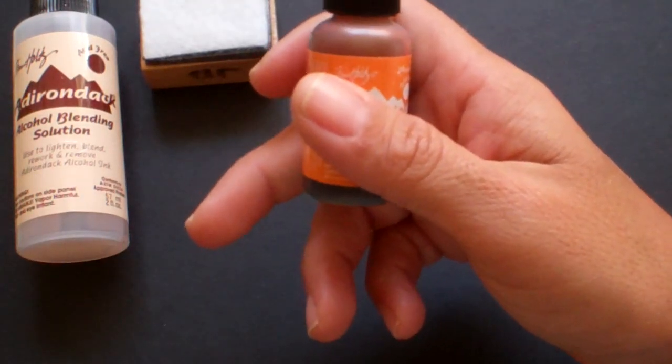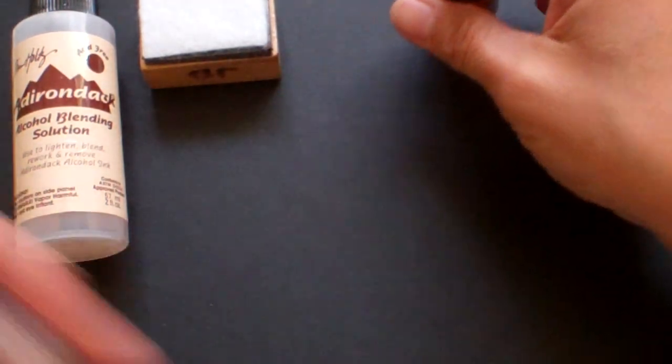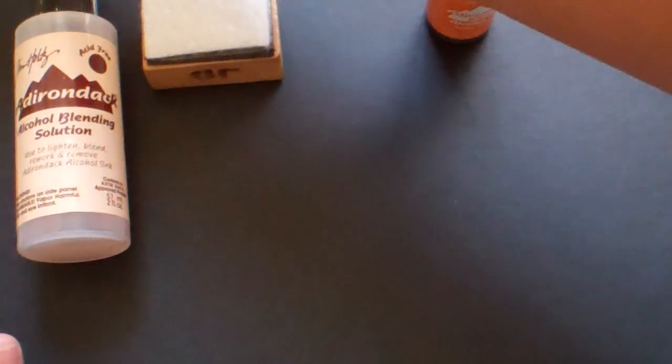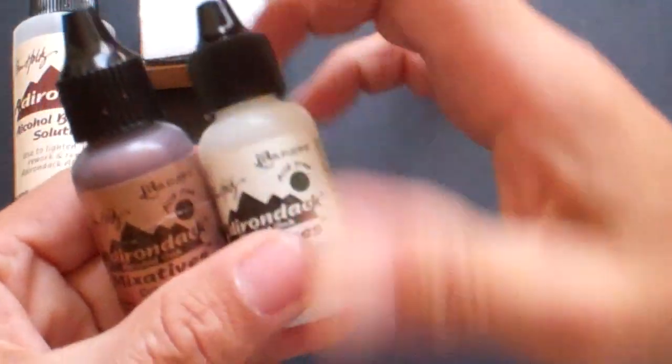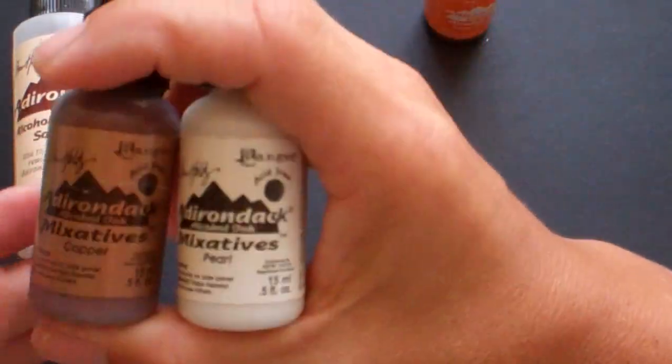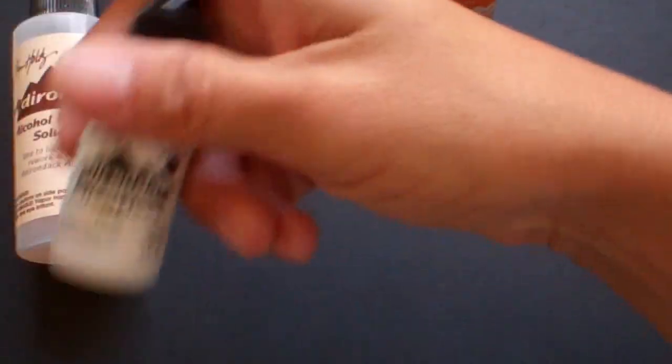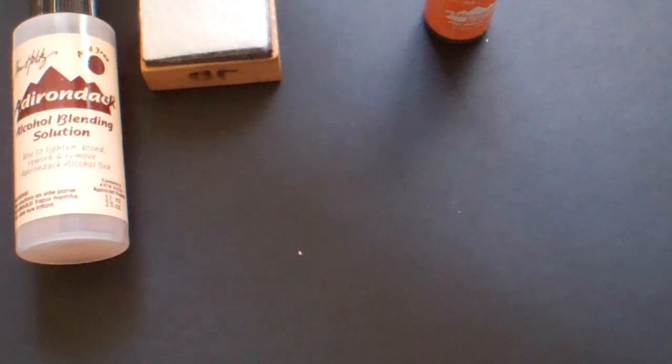So you need those two things, and then you need any number of different alcohol inks. At Michael's you can get the mixatives in a pack of two. If you want any kind of metallic or pearlescent look, you need to get the metallic mixatives. I only have the copper and the pearl. They have a mixing ball in them so you need to shake, shake, shake.